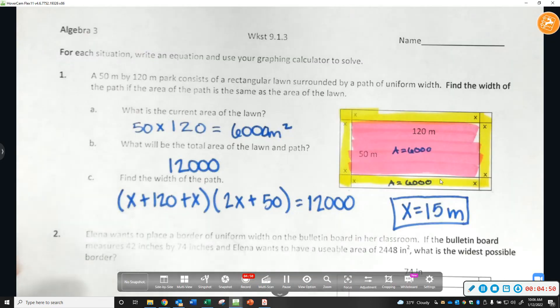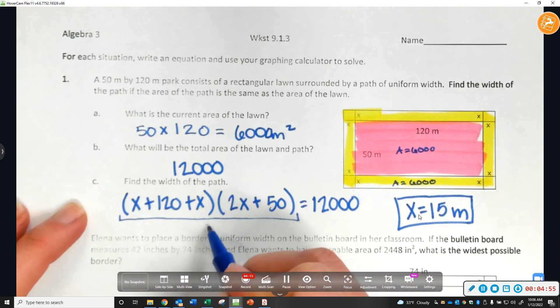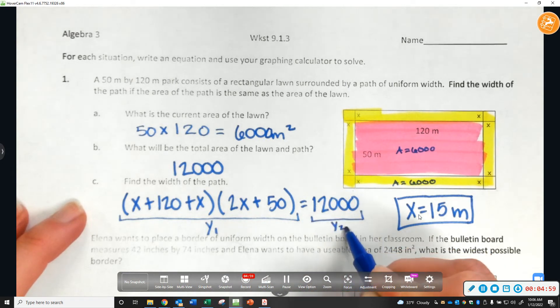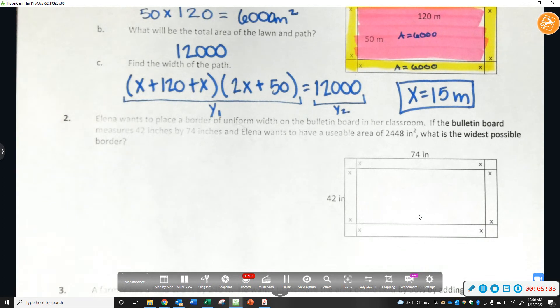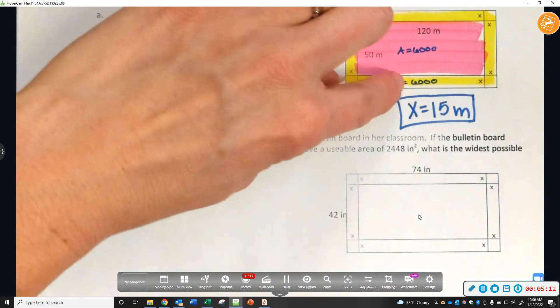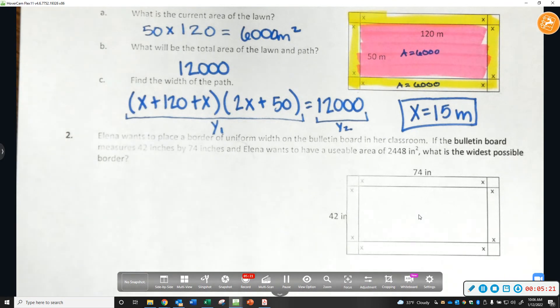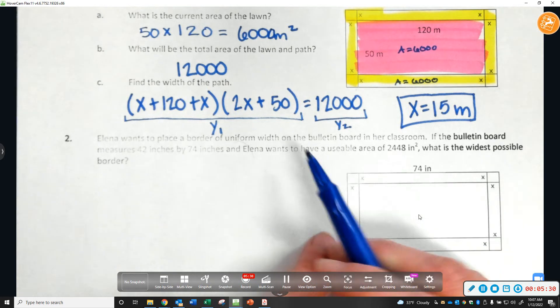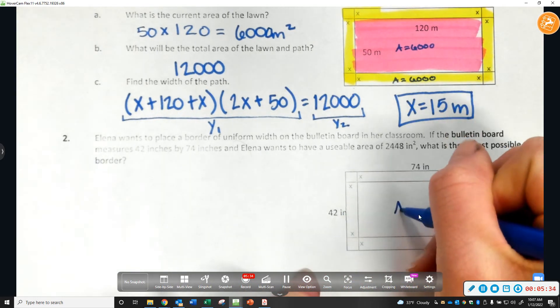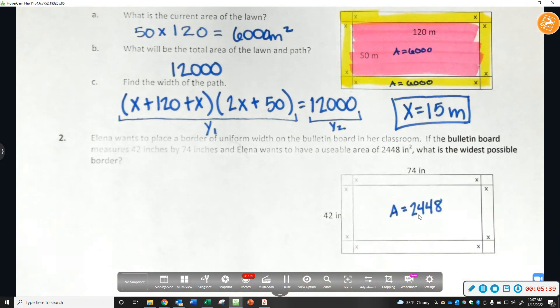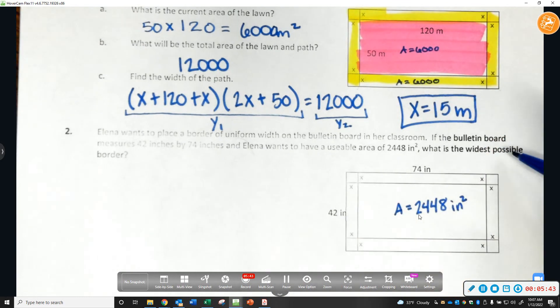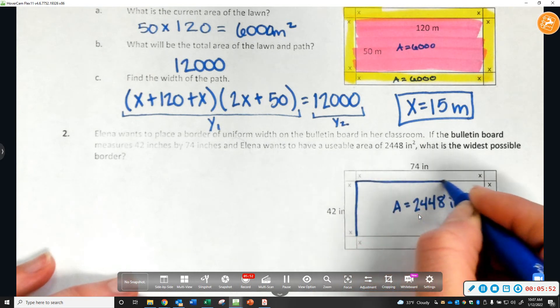This is going to be in y1, this is going to be in y2. It's how we are going to do it in our calculators. You have to read the problem to see how you set up your equation. Like for this one, the area was the same, so you had to add 6,000 plus 6,000 to get to 12,000. In this case, Alina wants to place a border of uniform width on the bulletin board in her classroom. If the bulletin board measures 42 by 74 inches, and Alina wants to have a usable area of 2,448 inches squared.